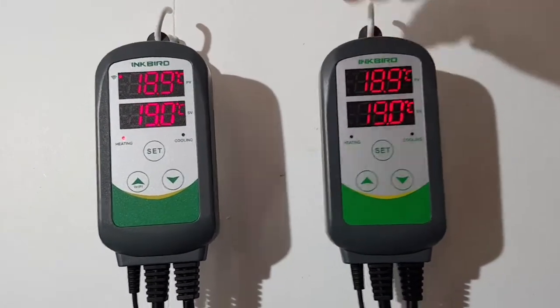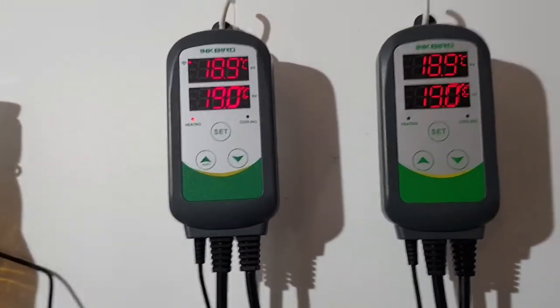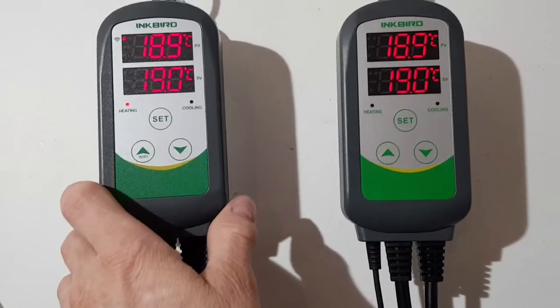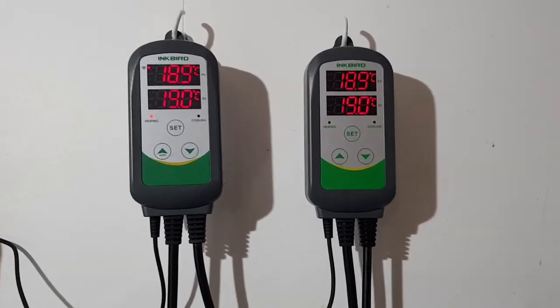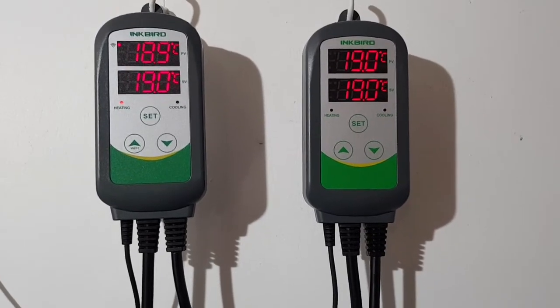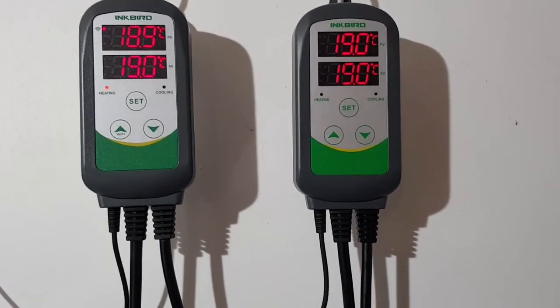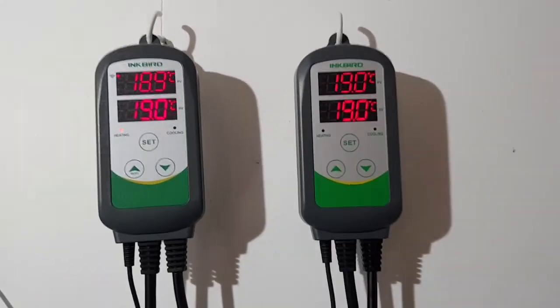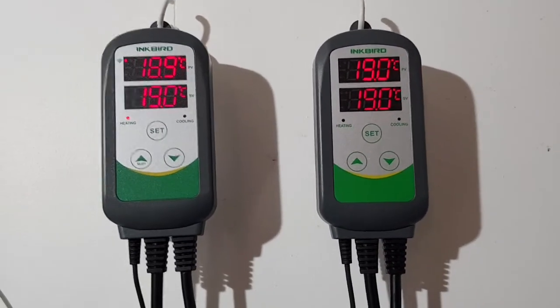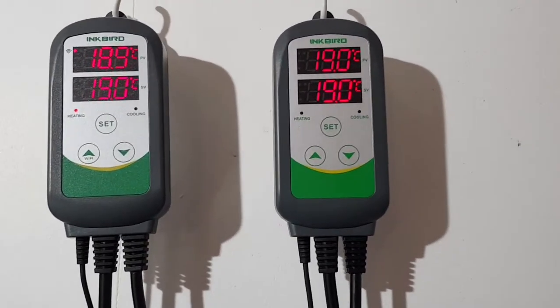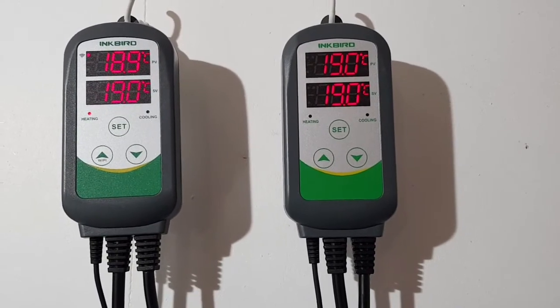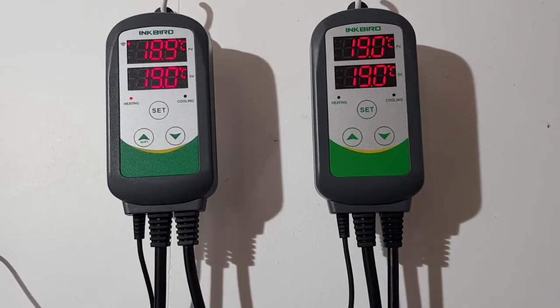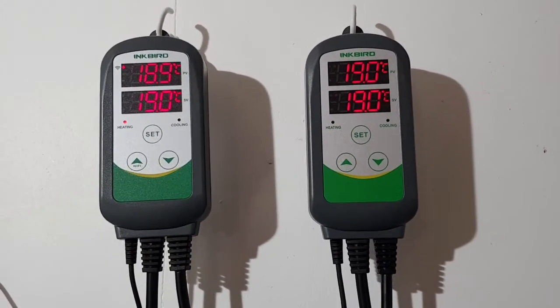Let me talk very briefly about the price. This is the Inkbird without Wi-Fi, this is the Inkbird with Wi-Fi. This was 25 quid, these are about 45 quid. Is it worth the extra 20 quid? Well, let's look at it another way. I've got a discount on this. It's normally 30 quid. That makes the difference slightly more bearable at £15.